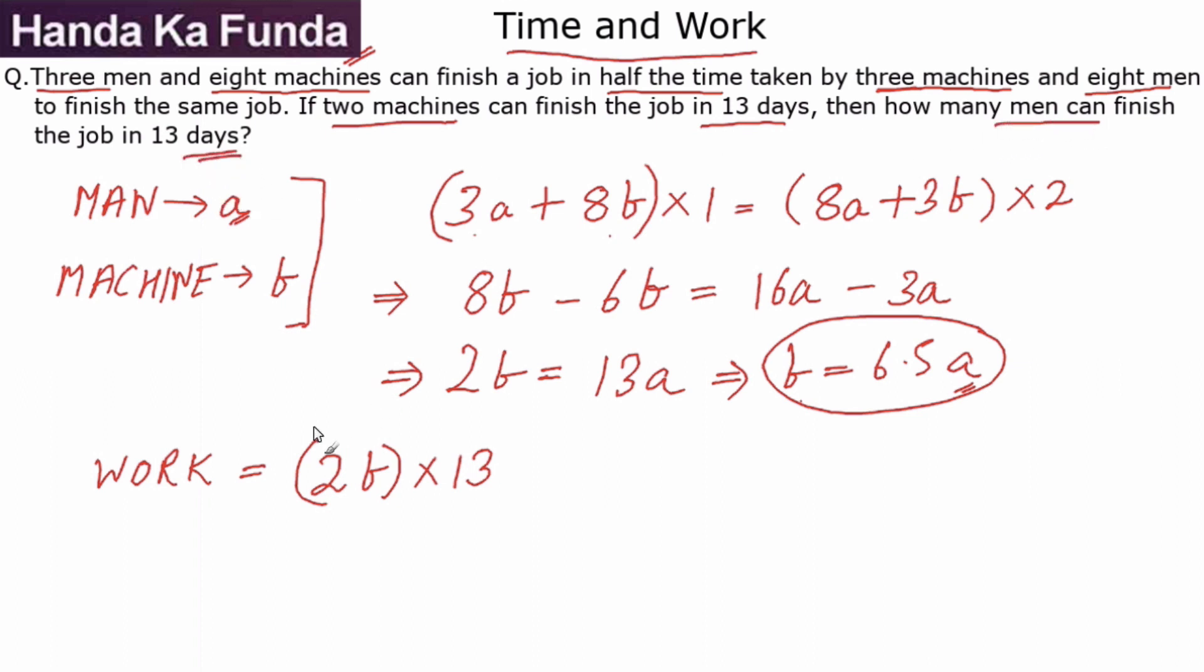So first of all, we have 2b into 13. Now instead of using this as 2b, let me convert it into the units of 'a', or into the work that a man does. Now b equals 6.5a, so if I put that here, 2b will become 13a into 13. Or I can say that the total work to be done is 169a, or 169 man-days is the total amount of work that is to be done.